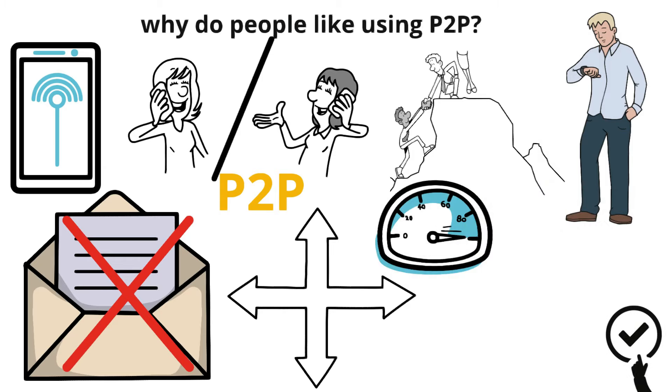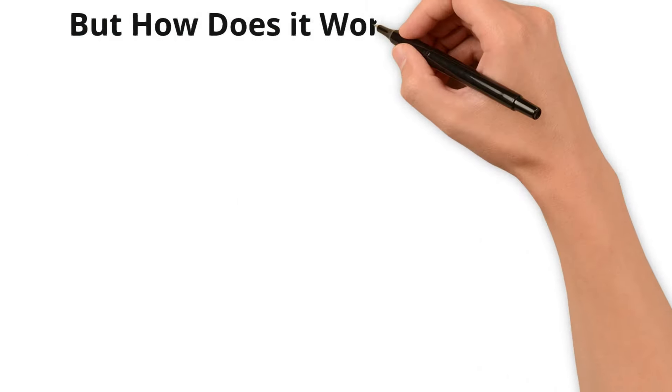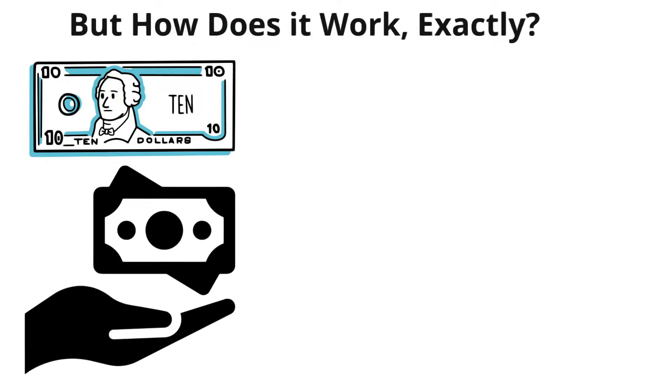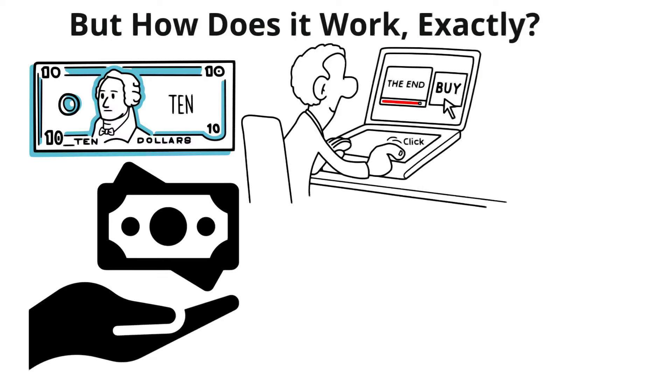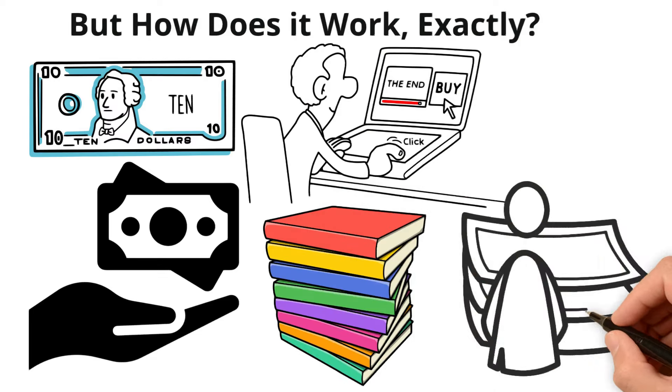It's quick, you're the boss, and you get to make all the choices. But how does it work exactly? Let's say you have ten dollars from your birthday. With P2P lending you could lend that money to someone who needs it to buy something important like books for school. They promise to give you your ten dollars back plus a little extra for being so nice. That extra is your profit.